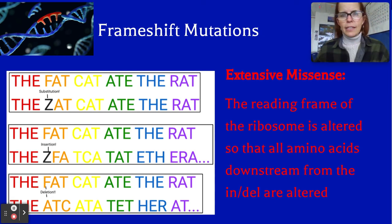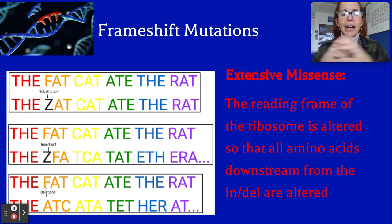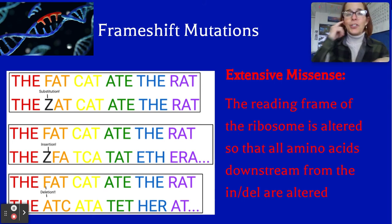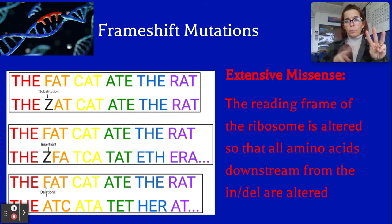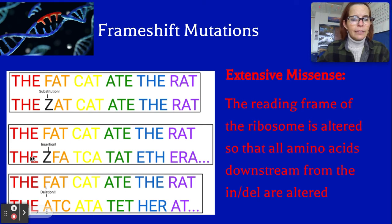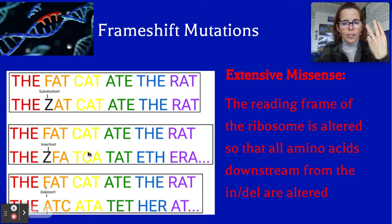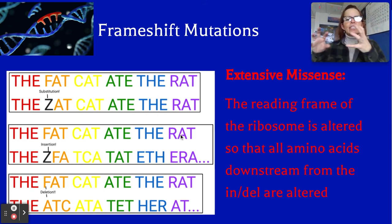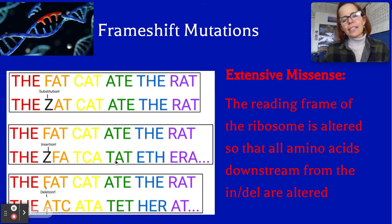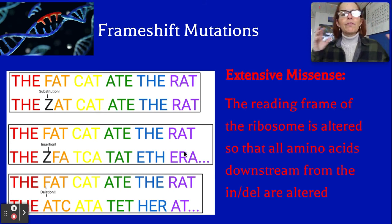Now look at insertion. I've inserted a Z in front of the F. Now reading three letters at a time: 'the' is fine, then Z-F-A is the next reading frame, then T-C-A, then T-A-T, then E-T-H, then E-R-A. Our sentence becomes: 'the, ZFA, TCA, TAT, ETH, ERA' — it doesn't make any sense. We've shifted the reading frame, so everything after the insertion is nonsense.